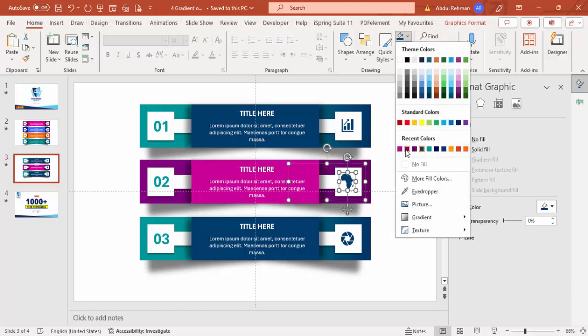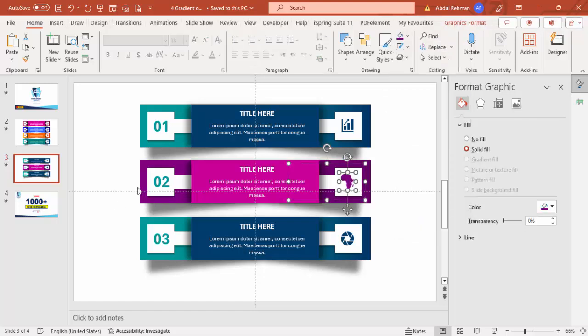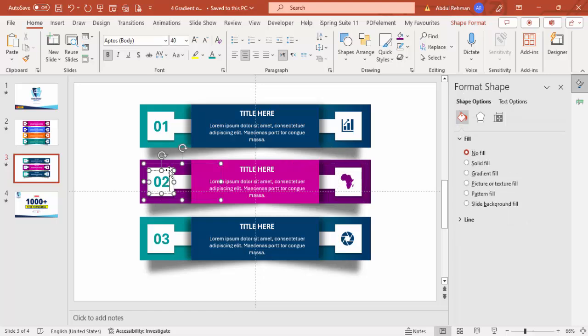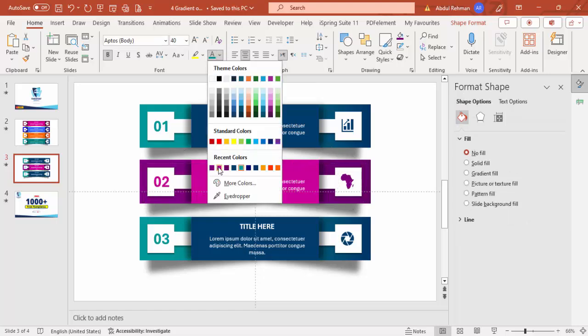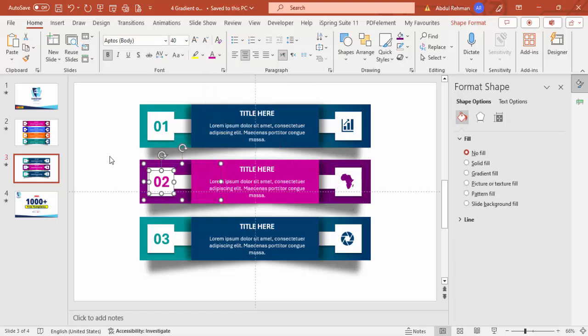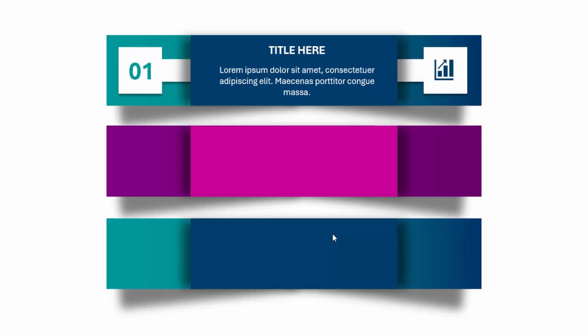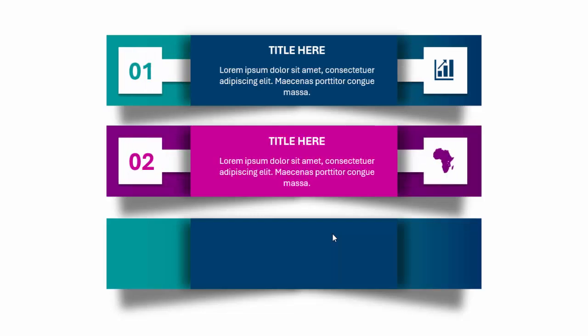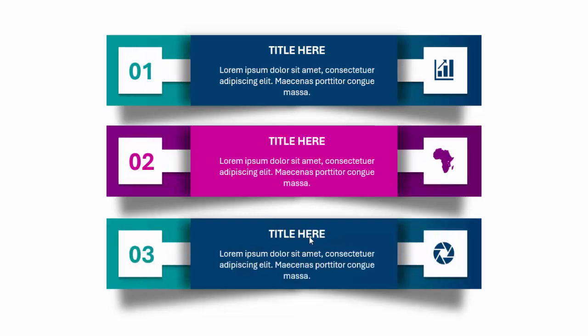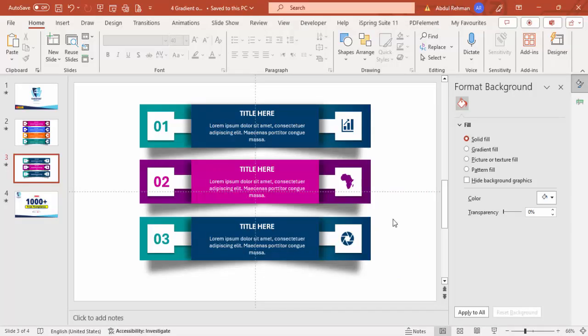Change the icon color to match, and do the same for the other shapes. Similarly, change the colors for the remaining options. When I click, you can see the first option comes in, then the second option, and the third option — the infographic is complete.